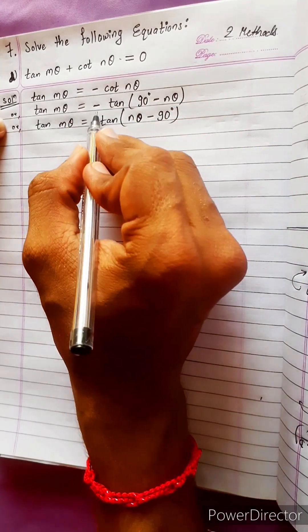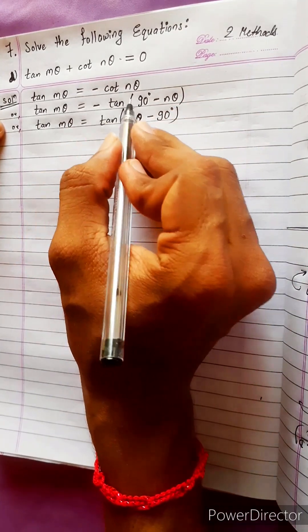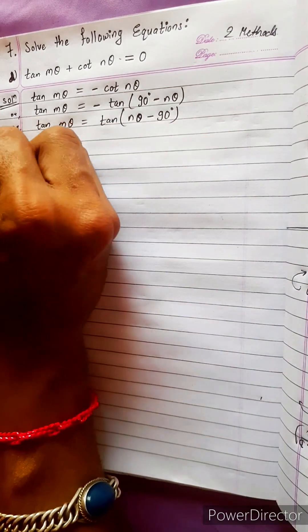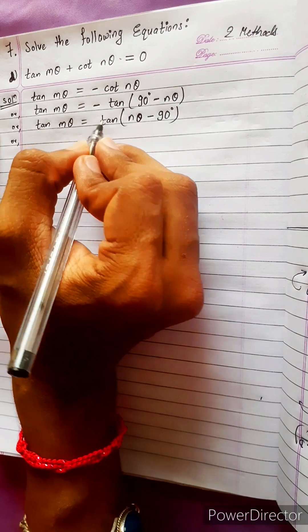Look here. Did you understand? This minus goes this side to multiply. Plus minus minus 90 minus minus plus n theta. Now what can we do? Tan tan cancel.